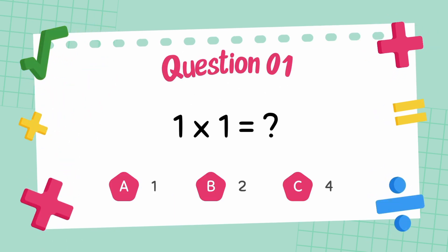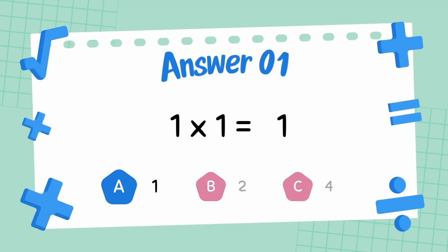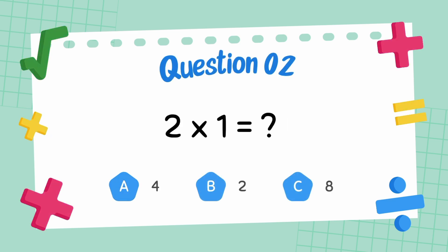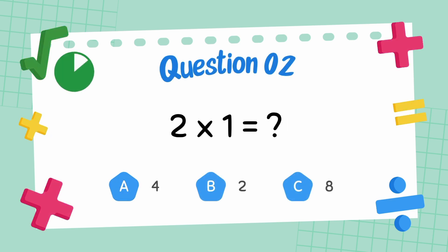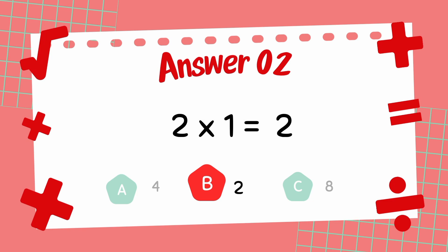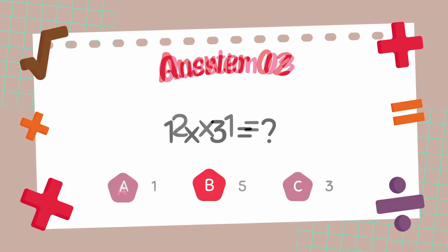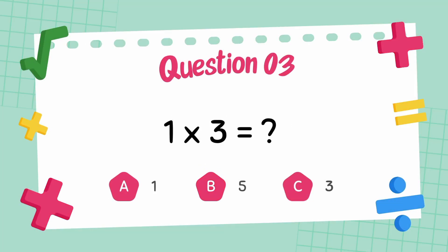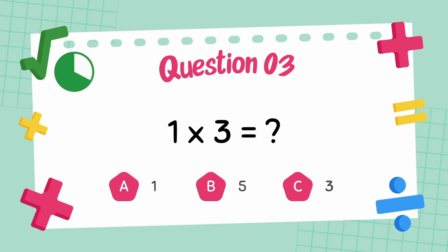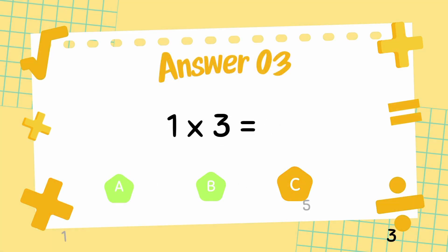What is 1 multiply 1? The answer is 1. What is 2 multiply 1? The answer is 2. What is 1 multiply 3? The answer is 3.